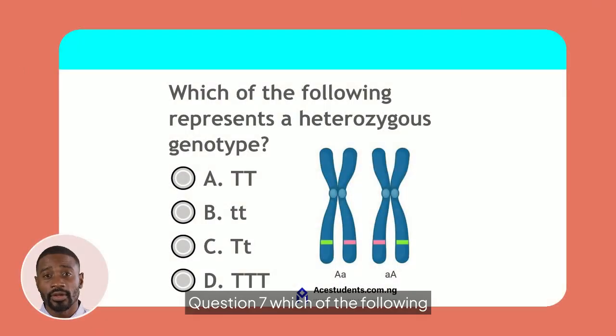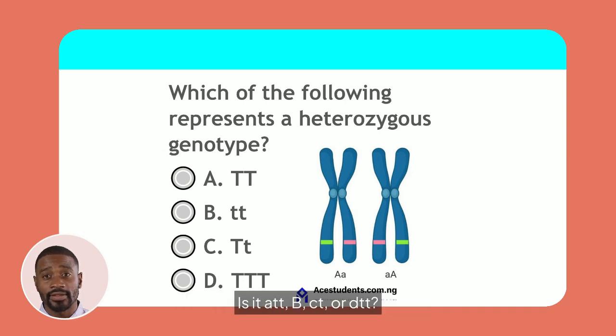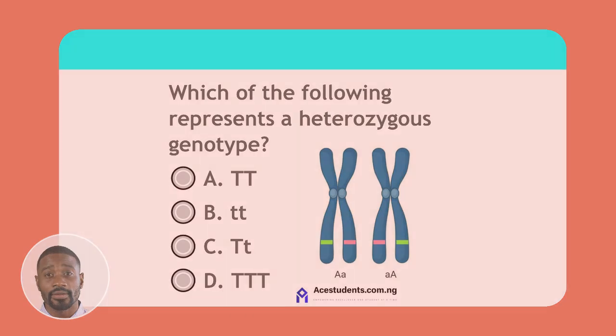Question 7. Which of the following represents a heterozygous genotype? Is it A. TT, B. tt, C. Tt, or D. T? Consider the combination of alleles in genetics.